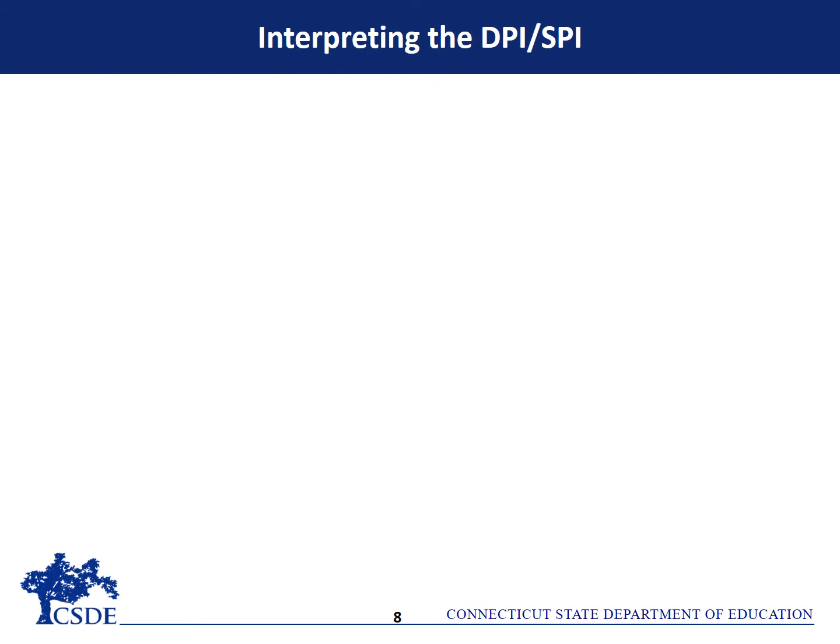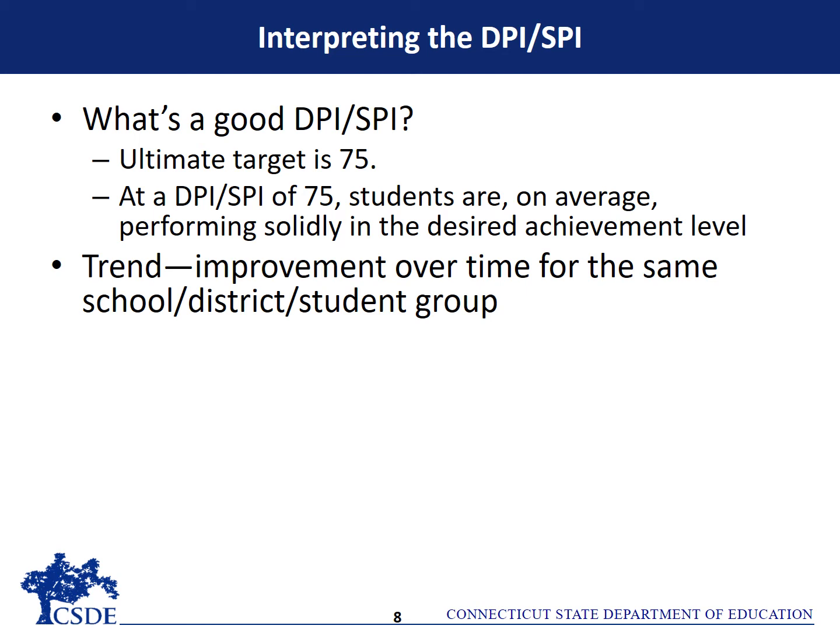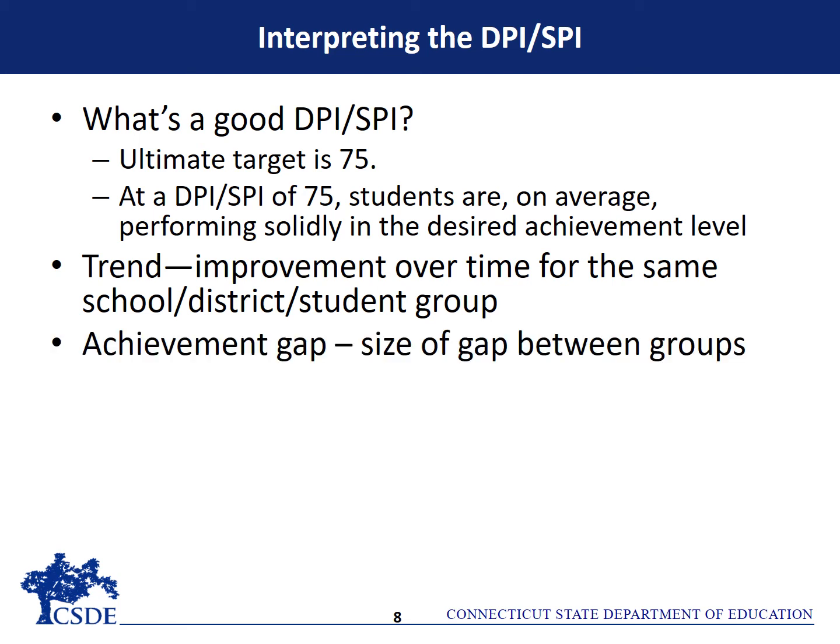But now how do I make sense of the DPI or SPI? What's a good DPI or SPI? Based on our analyses, we've established that at a DPI or SPI of 75, students are on average performing solidly in the desired achievement level. So if the performance index for your district, school, or student group is below 75, then it means that achievement needs to improve. The DPI or SPI is also a really good measure to use for tracking trends in achievement or for evaluating the size of achievement gaps between different groups of students.